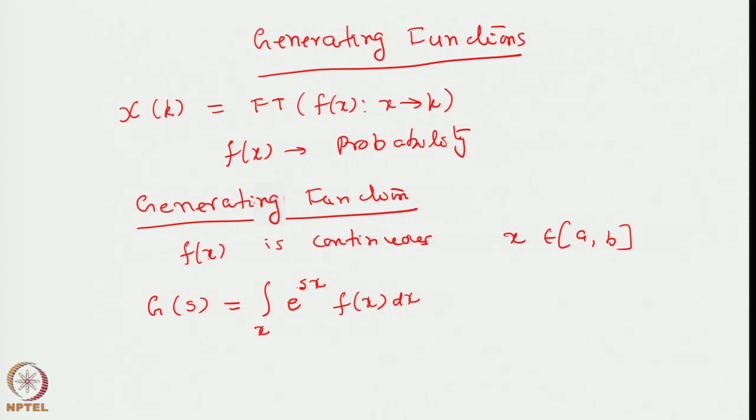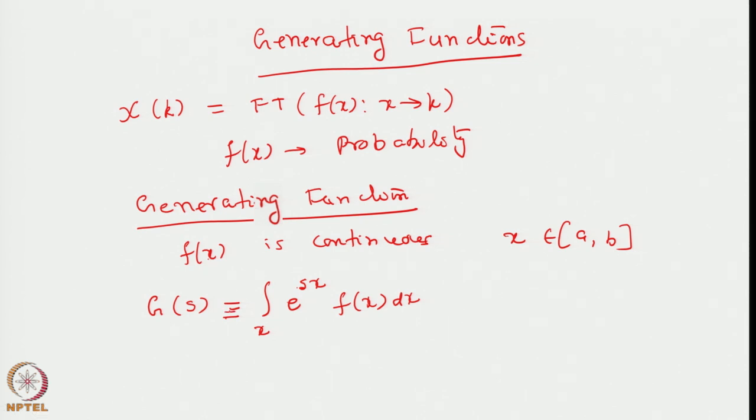Whether s should be positive or negative, we will not specify right now. The domain of s will depend upon the region on which this integral exists; it may not exist for all values of s. So long as it exists in some support space for s, the generating function is useful. This is essentially a definition. Once we have a generating function, like the characteristic function, we can define moments of the distribution function by differentiating g(s).